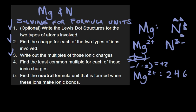I'm going to want to write this out for nitrogen as well. It has a negative three or three minus charge. Multiples of three are going to be three, six, nine, and so on. Then we're going to continue with finding the least common multiple for each of those ionic charges. Out of these two sets of data, there is a least common multiple, and that's going to be six.